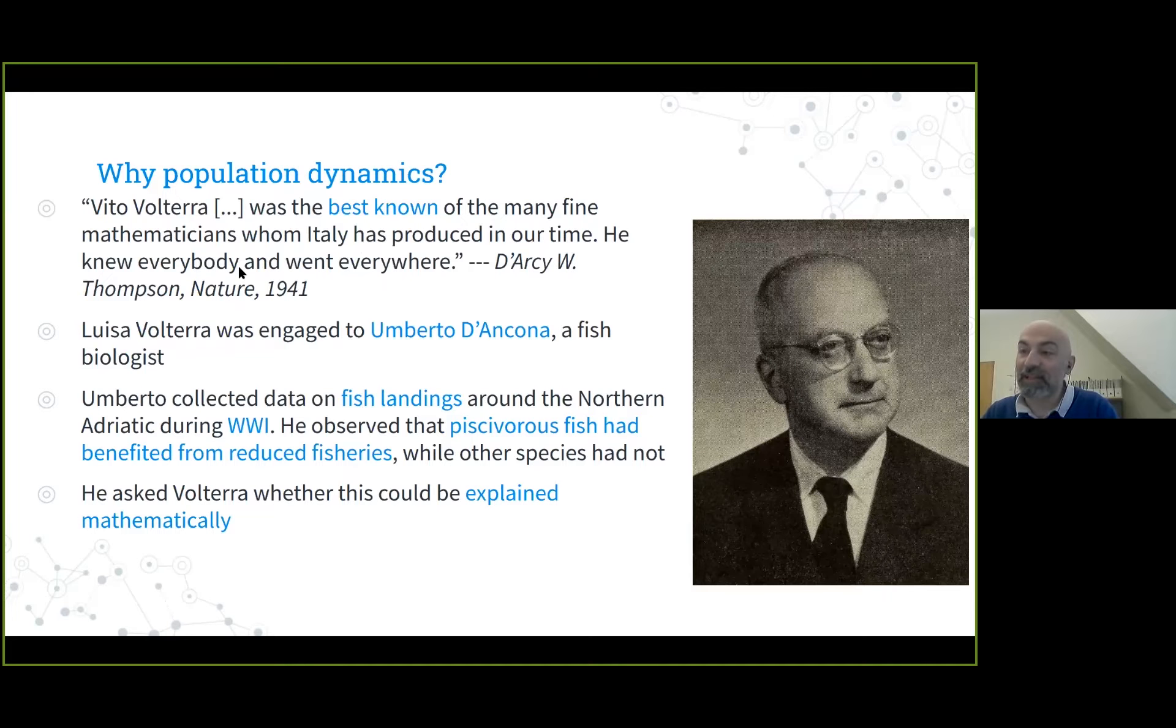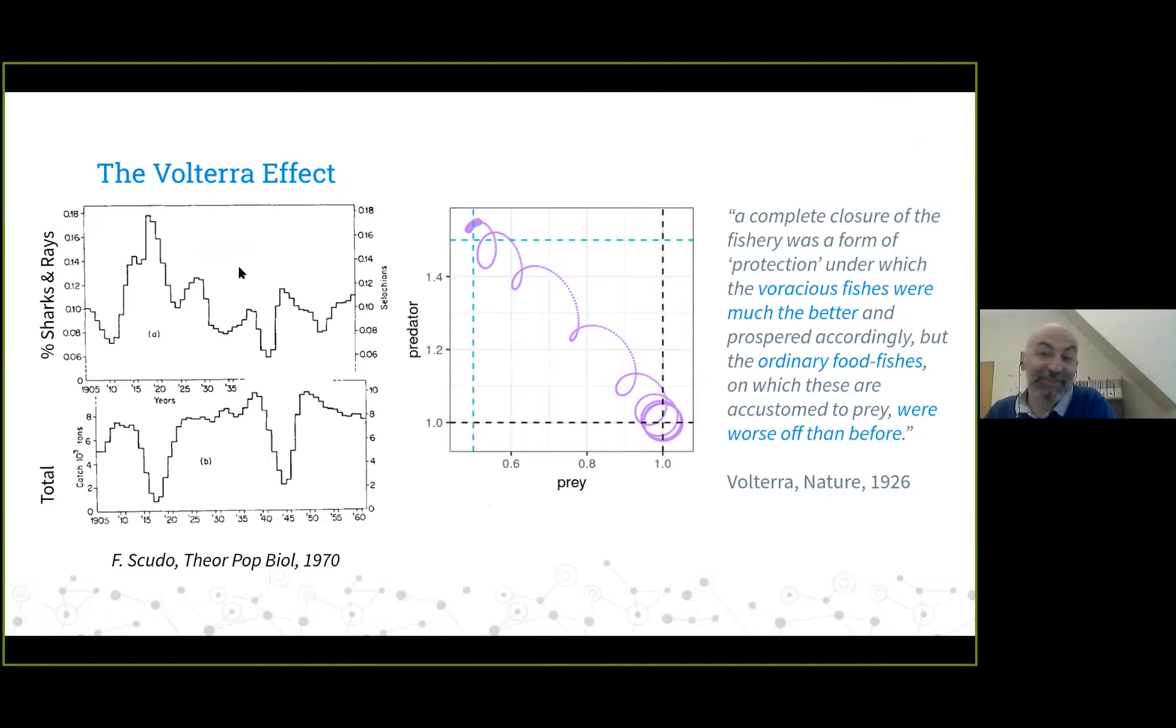How come an aging mathematician all of a sudden falls in love with ecology? He didn't have to fall in love with ecology because his daughter, who was a biologist, fell in love with her professor, Umberto D'Ancona, a young fish biologist. Umberto had collected data on fish landings before and after World War I. You can imagine the Adriatic Sea was basically fenced off during World War I, and fishery decreased dramatically. What Umberto had noticed is that some species had greatly benefited from the closure of the fisheries while others did not. Carnivorous species had benefited more than herbivorous species. He asked Volterra whether this could be explained mathematically.